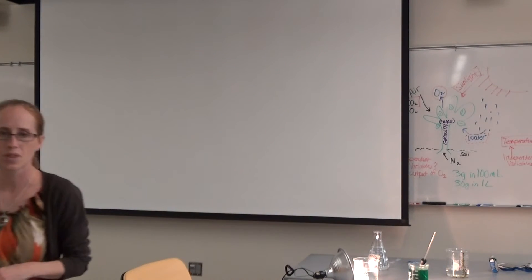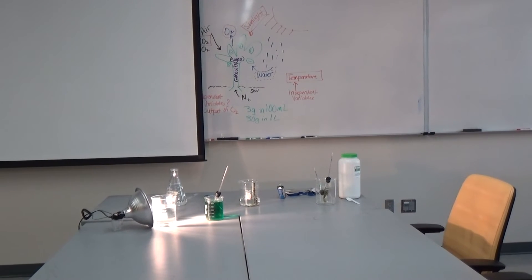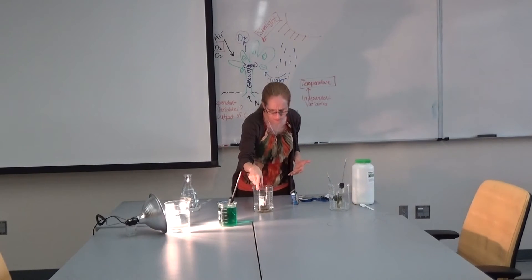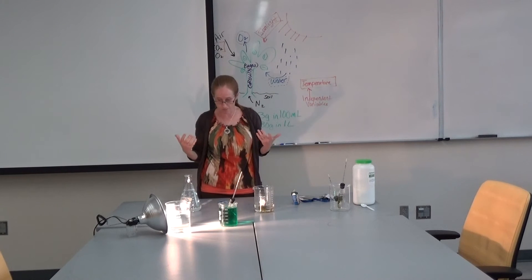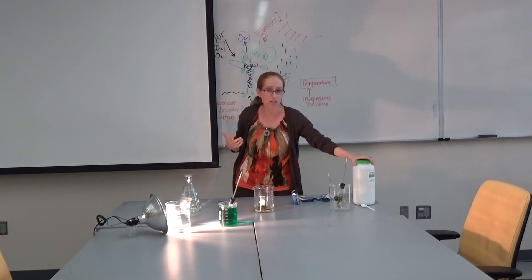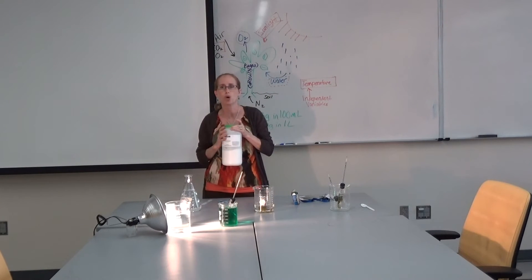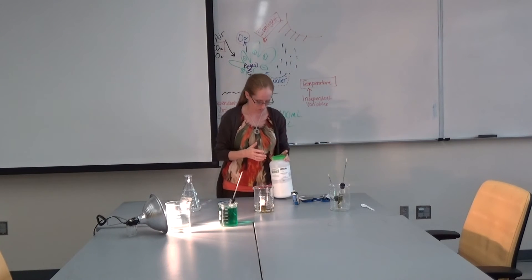Let's go back to our experimental setup. Going back to the setup, what are some of the other things we can change besides the light color? So light color is one thing. Another thing we talked about is changing the amount of CO2 or the inputs available to the plant.